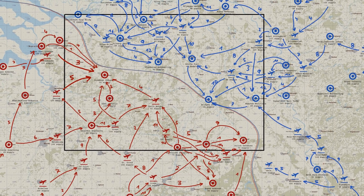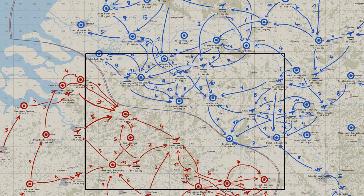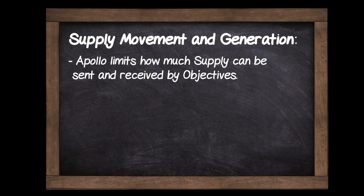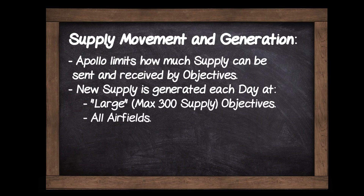Now at this point you may be wondering where all this supply comes from in the first place. Well, each day, every large 300 supply objective as well as every airfield generates a small amount of new supply. This is meant to represent new material being manufactured in factories or flown in by air transport from far in the rear.